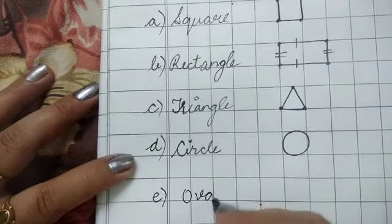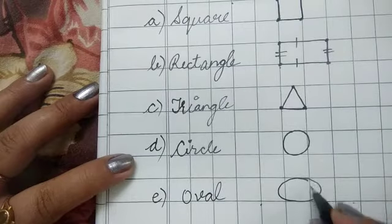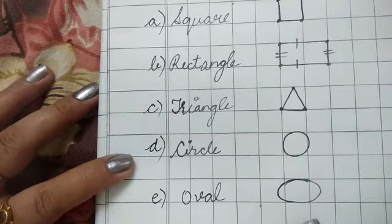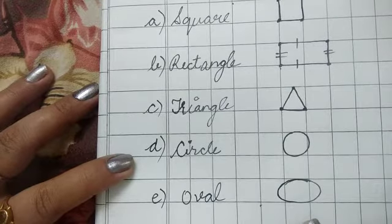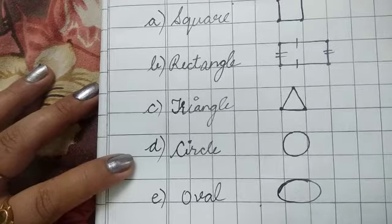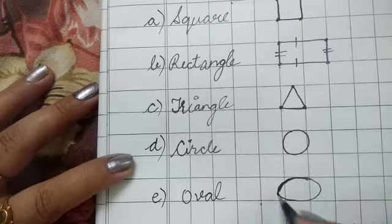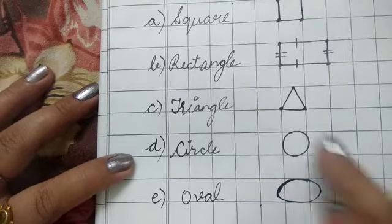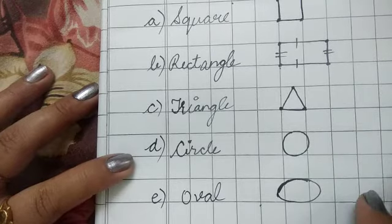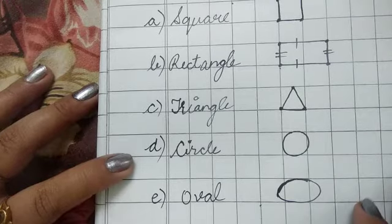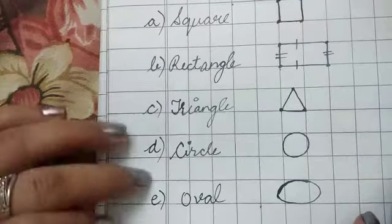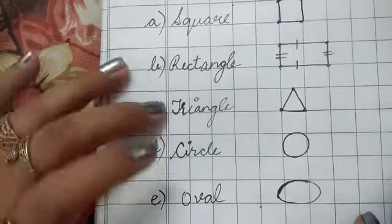Then oval. Egg is oval in shape, like an egg. Both circle and oval have no corners and no sides. I hope you all understand these flat shapes or two D shapes.